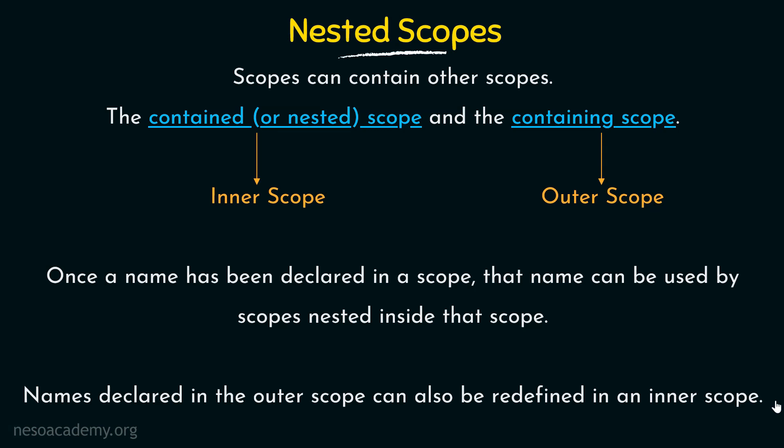If we have a name declared in the outer scope, and we have a nested inner scope, we can redeclare that same name again inside the inner scope. It will work, but it will work in a different way. Let us jump into the example and see how nested scopes work.